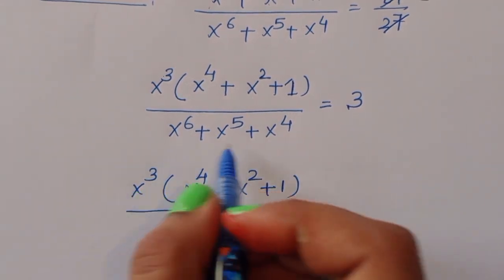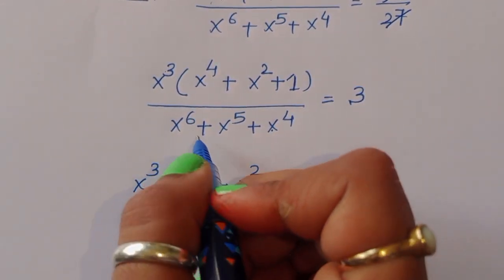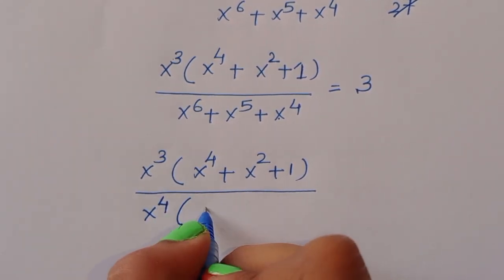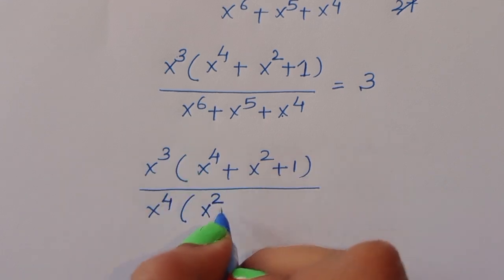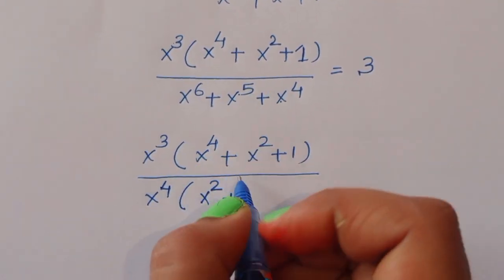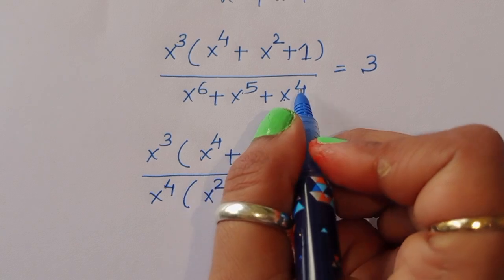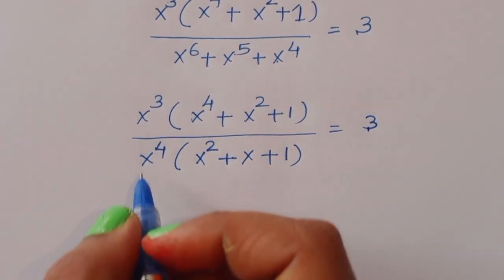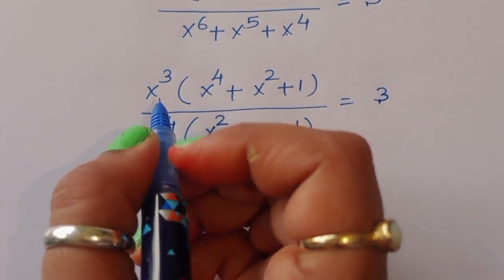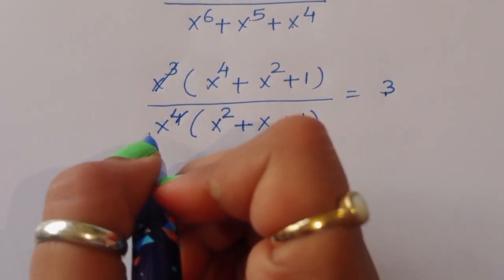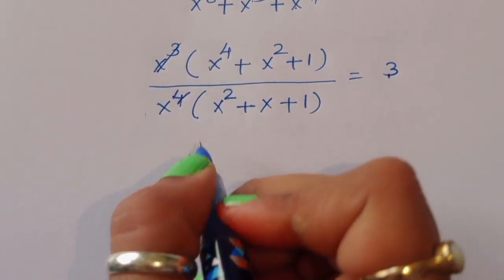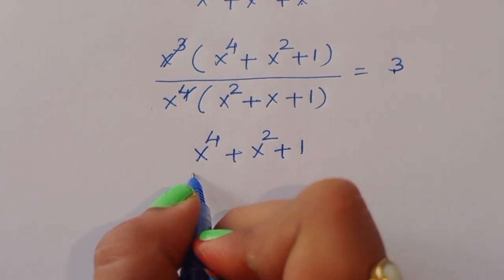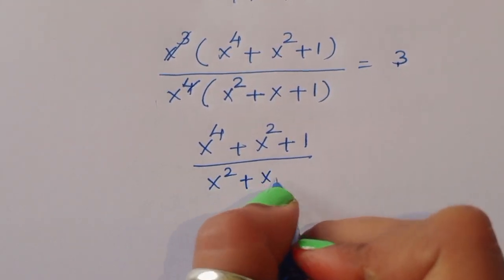In the denominator, we take x⁴ as common — since it is the lowest power — giving x⁴ times (x² + x + 1). We then cancel x³ from numerator and x⁴ from denominator, leaving x in the denominator. So we get (x⁴ + x² + 1) divided by x(x² + x + 1) equals 3.